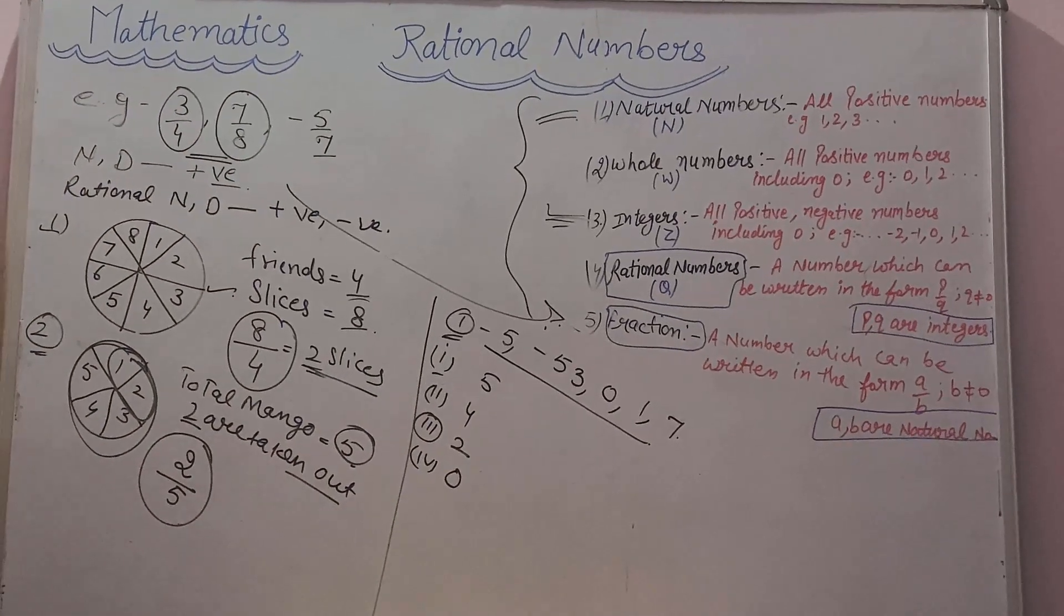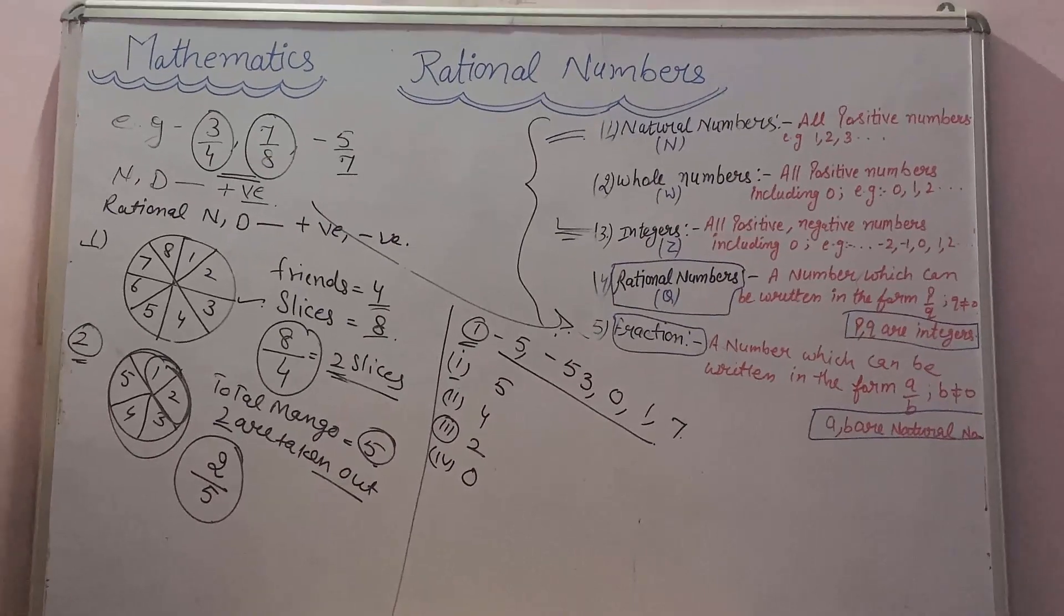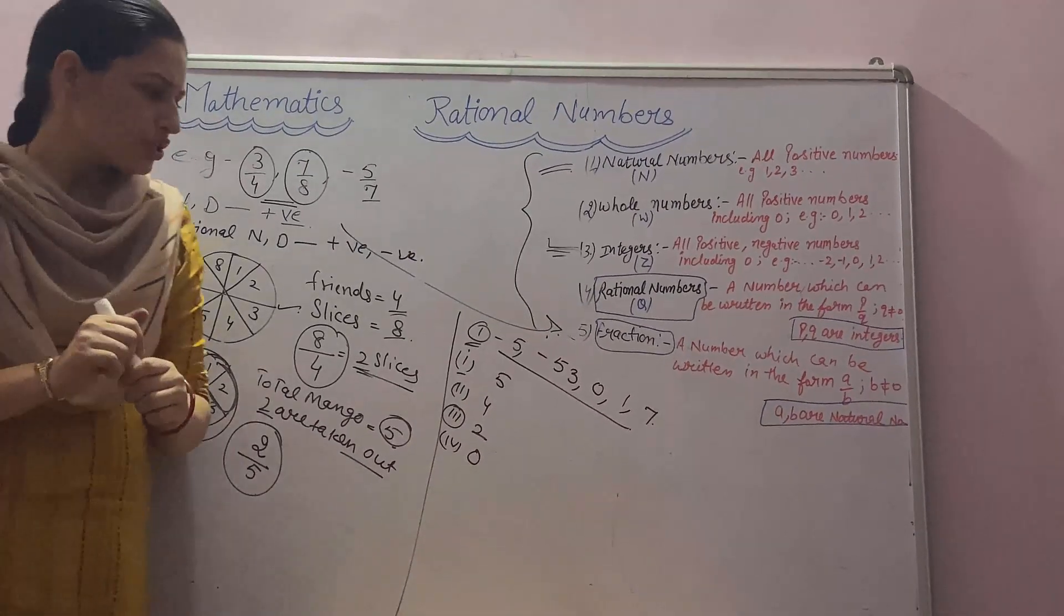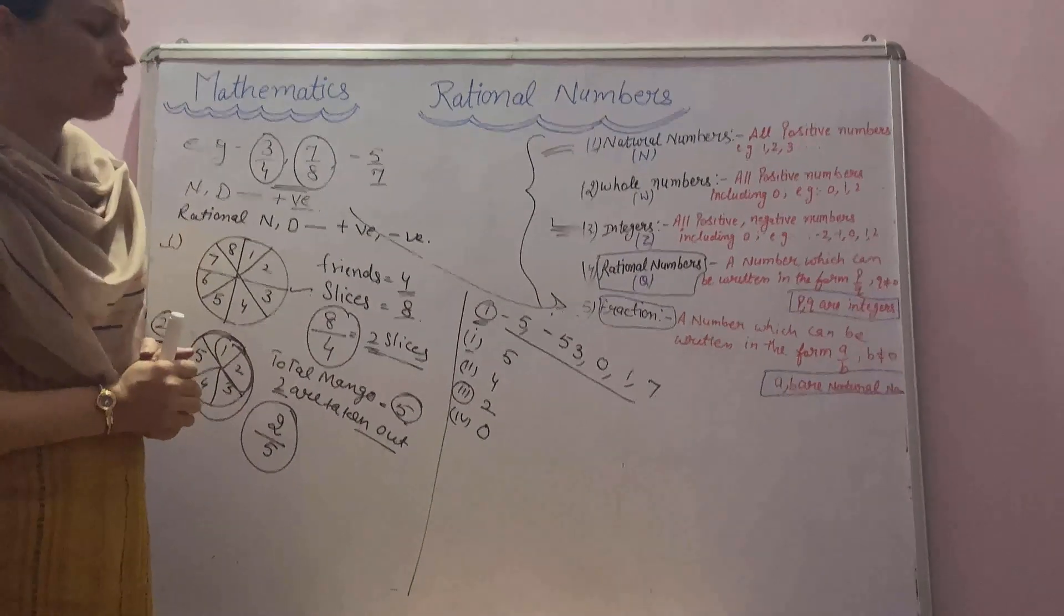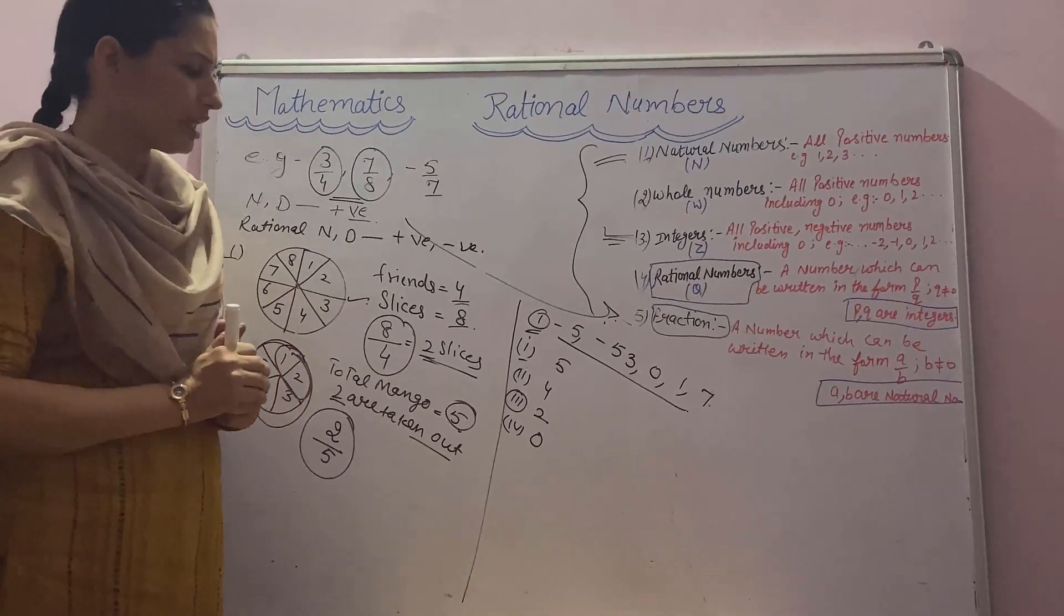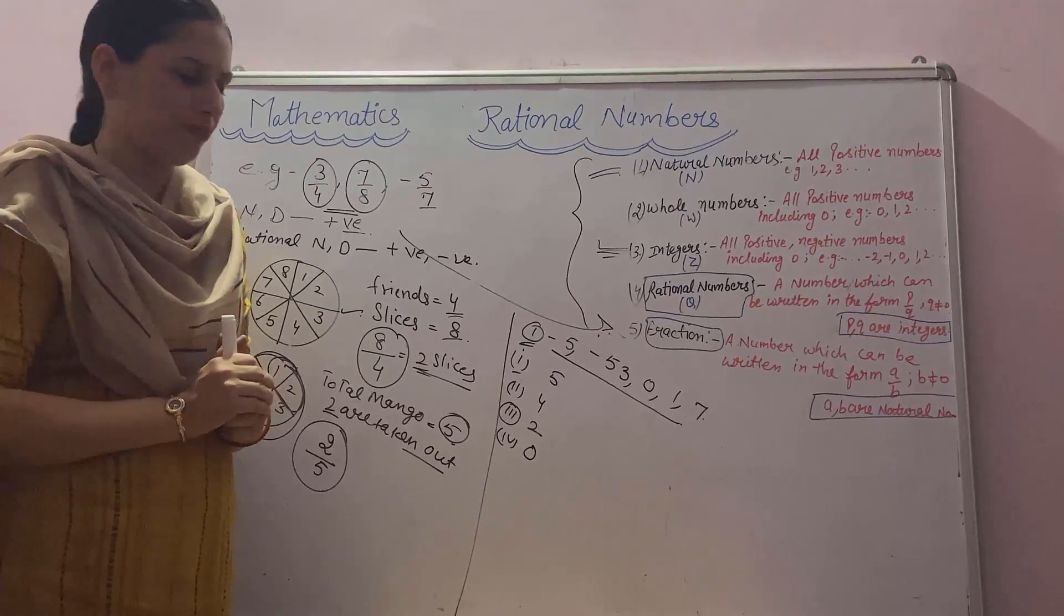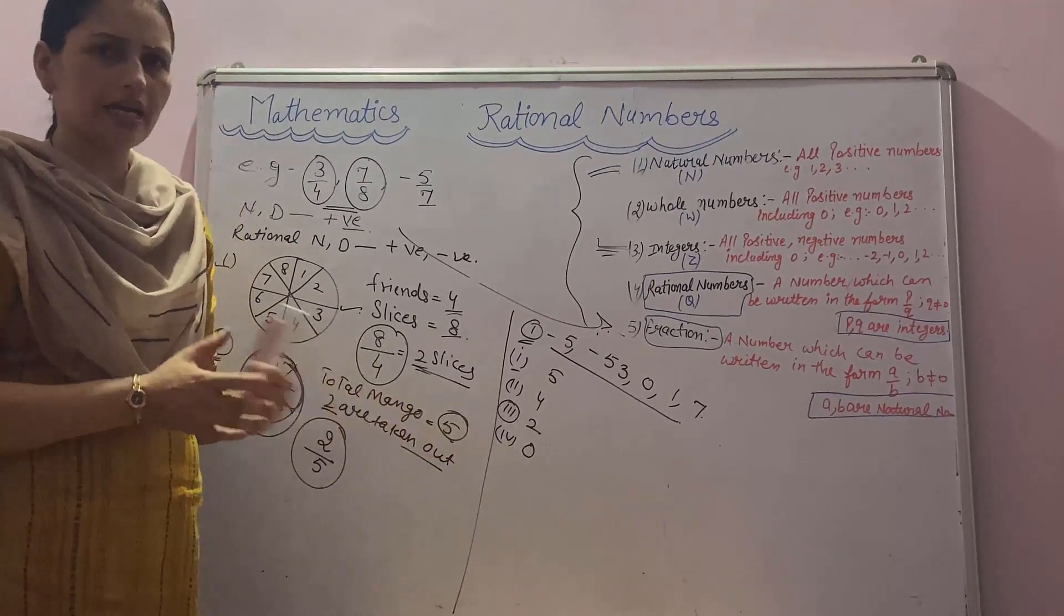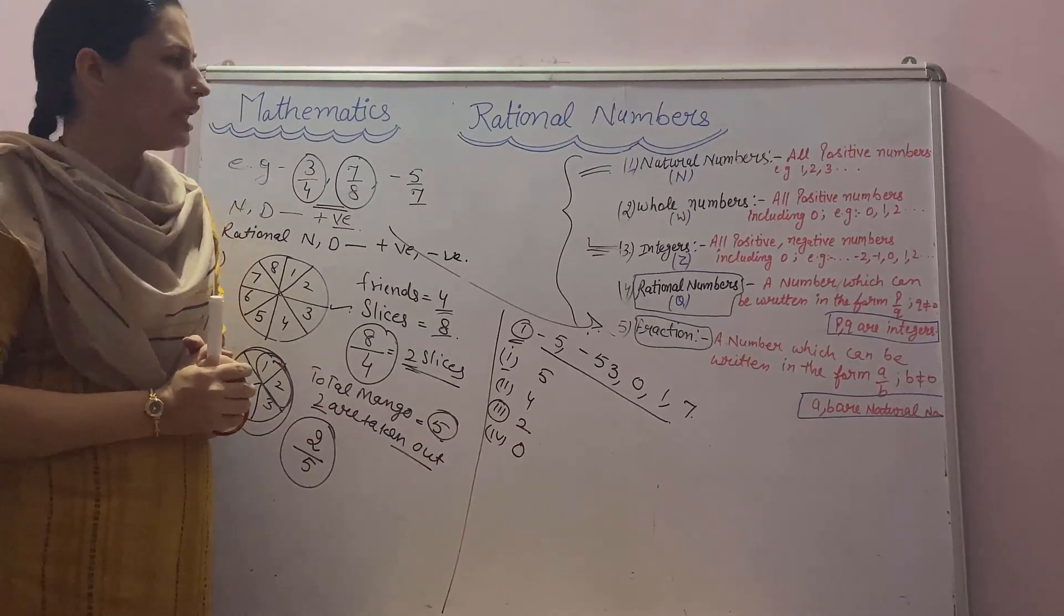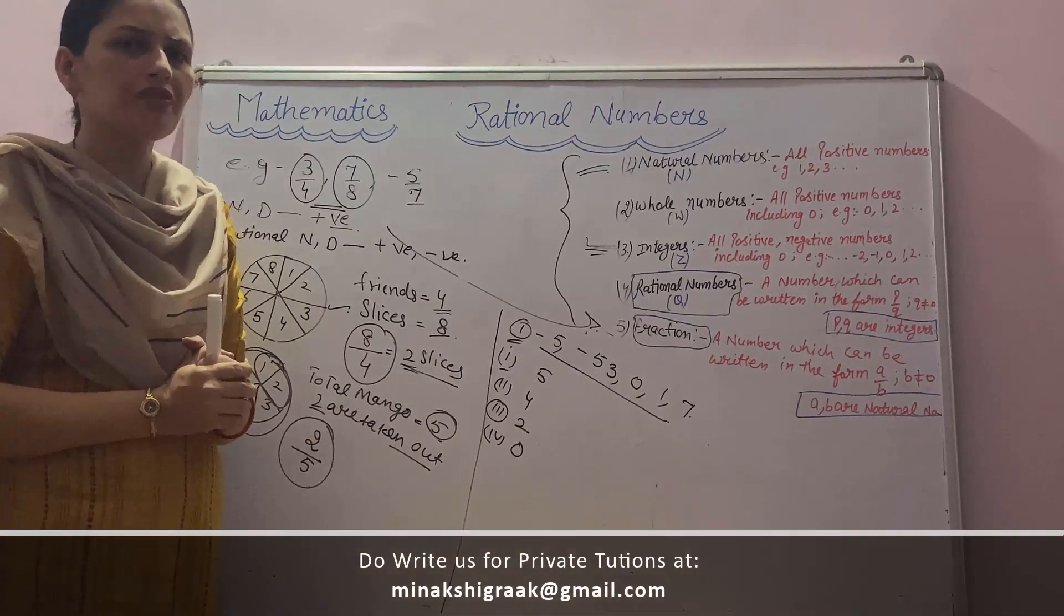Second exercise for your practice. You are going with your father on your birthday, and shopkeeper is running 50% discount. Then how will you put this in a rational number form? Do this exercise and put your answer in comment box.